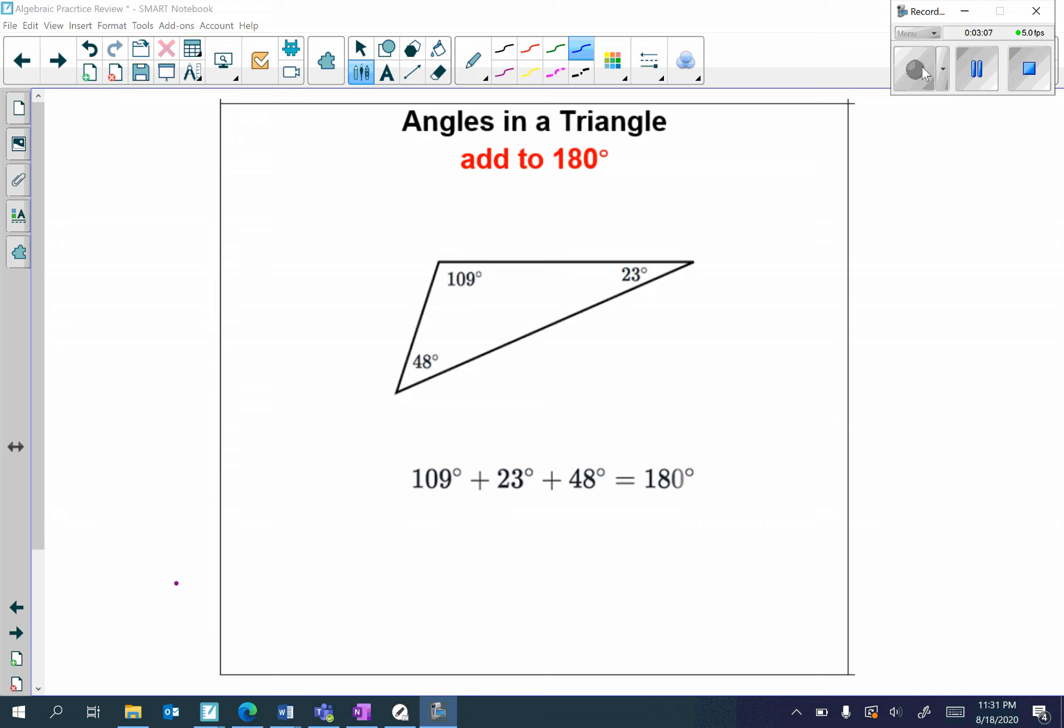So, interior angles or angles inside a triangle add up to 180. Always identify triangles and remember that the angles inside add up to 180 degrees.